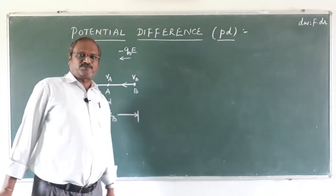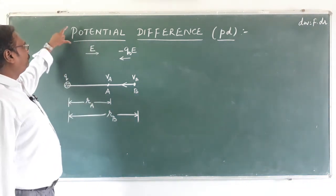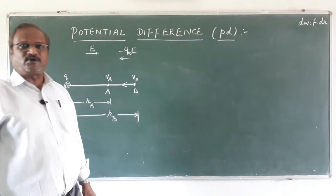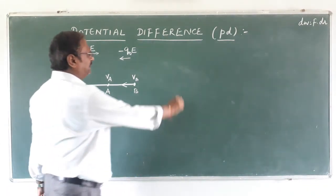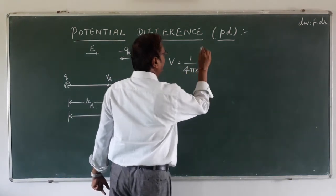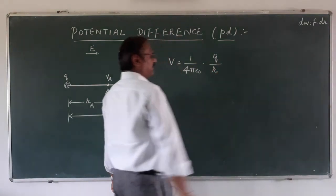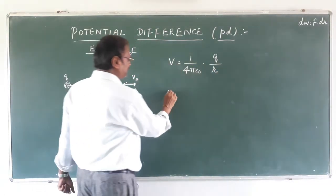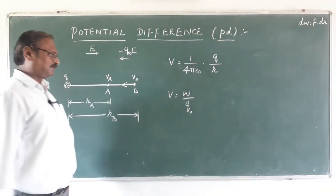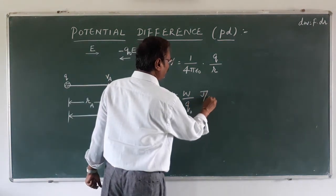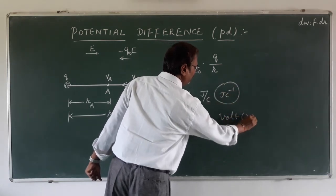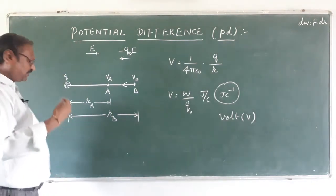Today in this video we shall learn about potential difference or PD. In the last video we studied about electric potential and we said that electric potential V is equal to 1 upon 4 pi epsilon naught into Q upon R. We also defined that work done upon the test charge which we are moving is called potential difference — joule per coulomb, which is actually called volt. Volt is the unit of electric potential as well as potential difference.